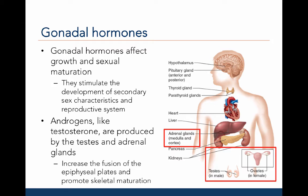Gonadal hormones affect growth and sexual maturation. They stimulate the development of secondary sex characteristics and the reproductive system. Androgens, like testosterone, are produced by the testes and the adrenal glands in males, and by the adrenal glands in females. Androgens increase the fusion of the epiphyseal plates and promote skeletal maturation. This maturation comes at the cost of linear growth, such that early maturers tend to be shorter than later maturers.